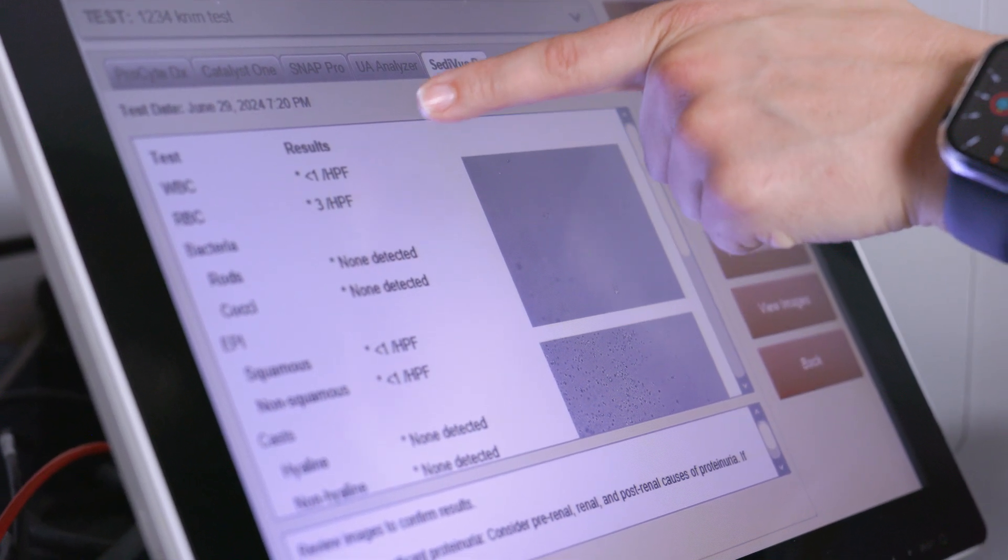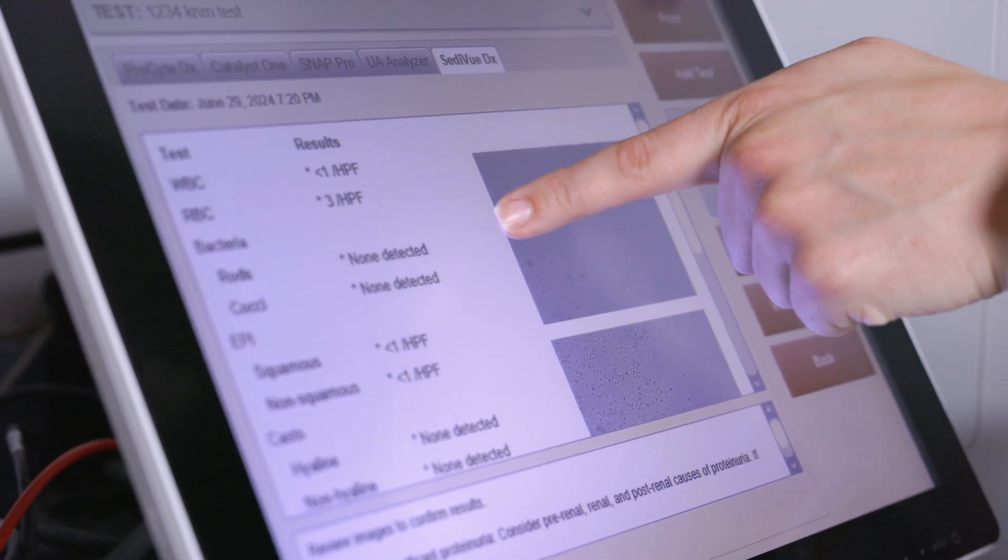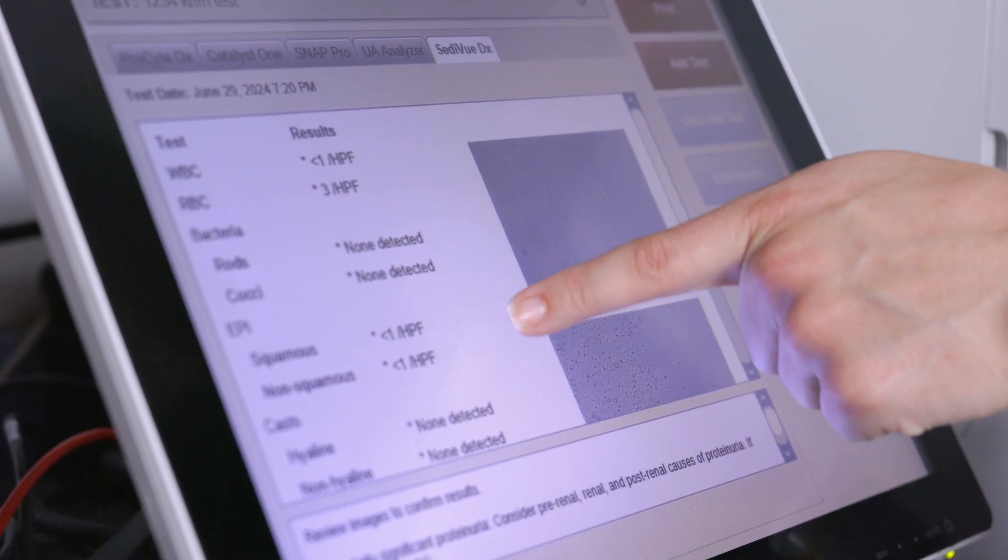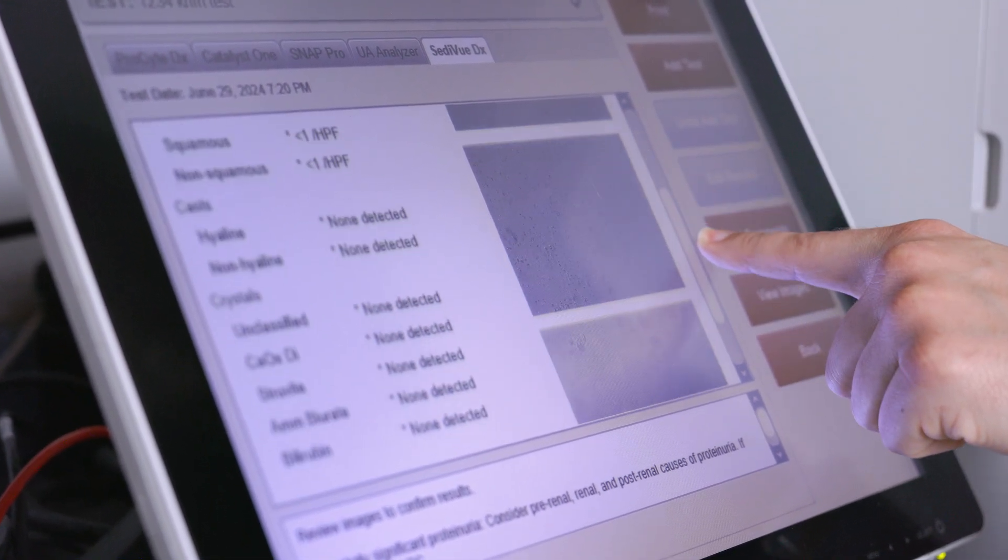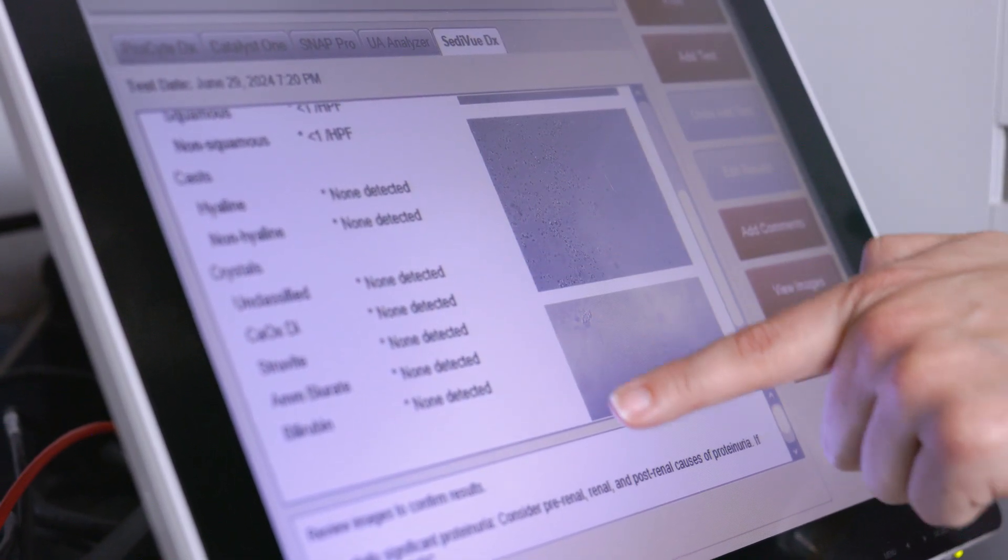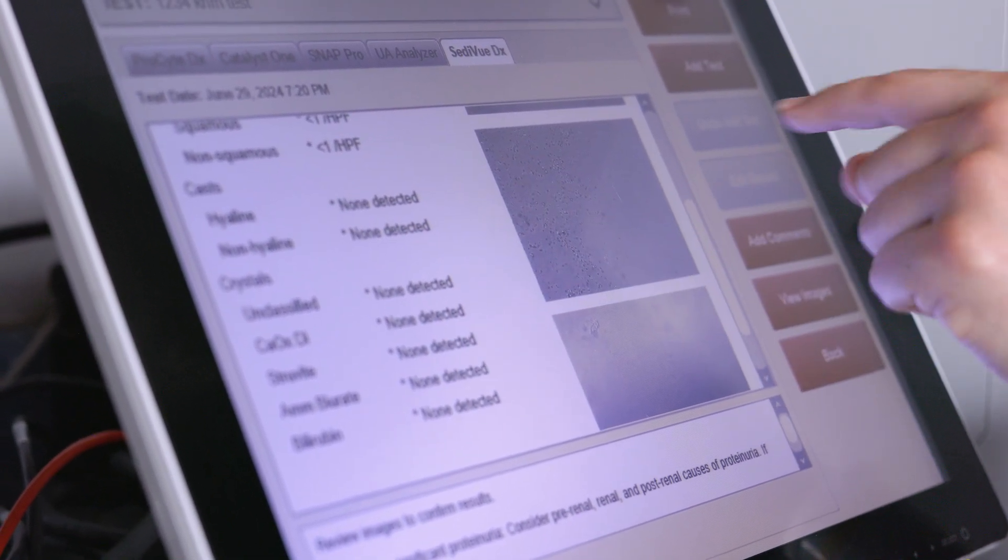But you can see we have our white blood cells, our red blood cells, bacteria, if there is any detected, epithelial cells. We also have urine casts that are noted and crystals that they all look for. So we did not see any casts and crystals in this urine sample.